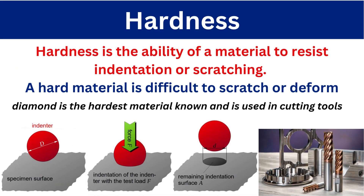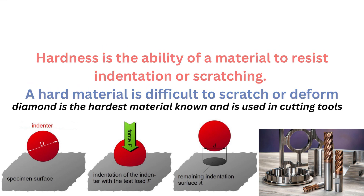Next we have hardness. Hardness is the ability of a material to resist indentation or scratching. A hard material is difficult to scratch or deform. Take the example of diamond — diamond is the hardest material and it is used in cutting tools.